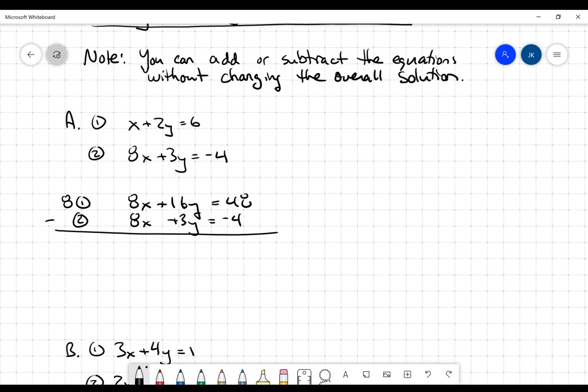And when I do that, 8x minus 8x is going to cancel. 16y minus 3y will be 13y. And 48 minus negative 4 is going to be 52.